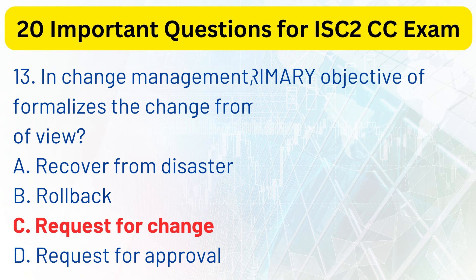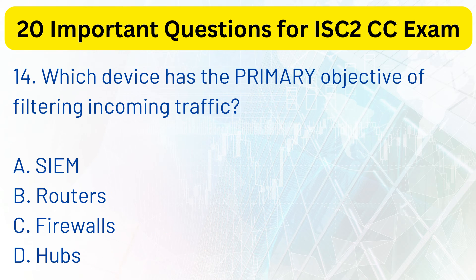Question 14. Which device has the primary objective of filtering incoming traffic? a. SIEM. b. Routers. c. Firewalls. d. Hubs. The correct answer is c. Firewalls.